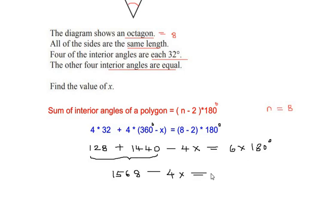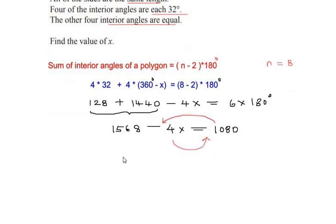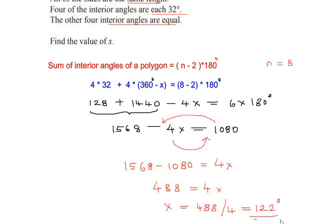So let us switch the places, taking negative 4x on the other side and bringing the 1080 on this side of the equation. We get 1568 minus 1080 is equal to 4x. So the difference between these two gives us a value of 488 is equal to 4x, or x is equal to 488 divided by 4, which is equal to 122 degrees. So this is the value of x.